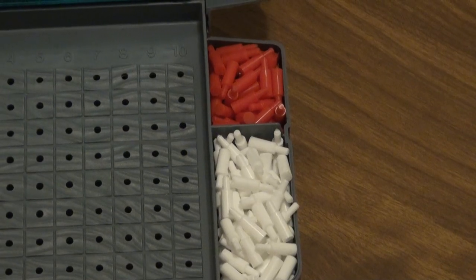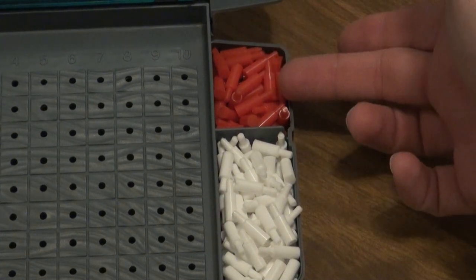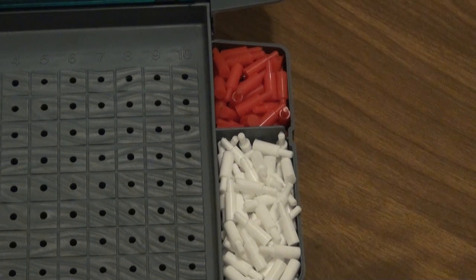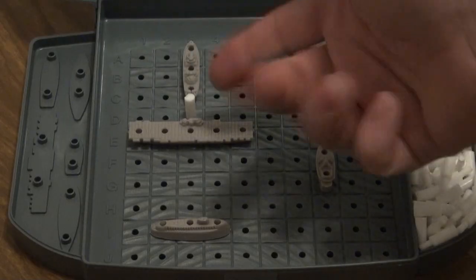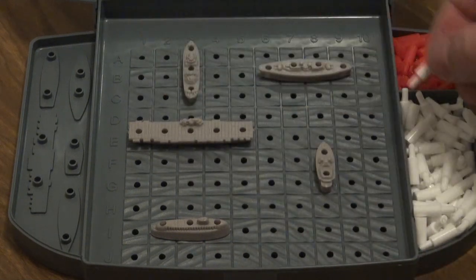The players also have two bins of pegs, with white pegs to track misses and red pegs to track hits. Personally, I only use the white pegs to keep track of my own misses, as this speeds up the process of cleaning up after the game. But this is only a house rule, and there are advantages to tracking all of your opponent's guesses.